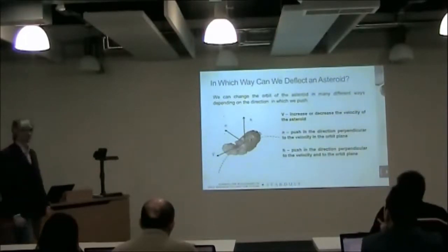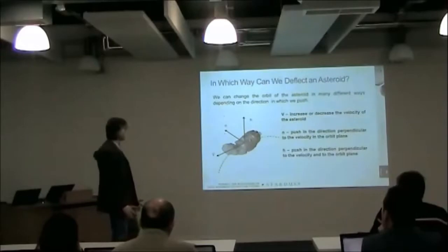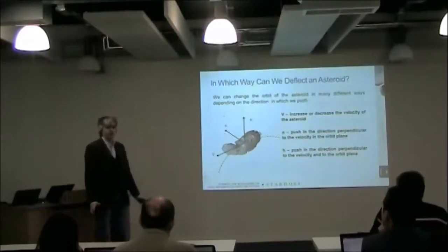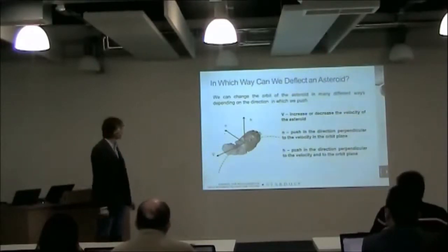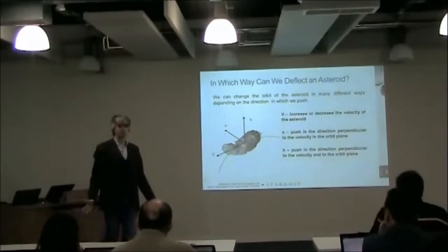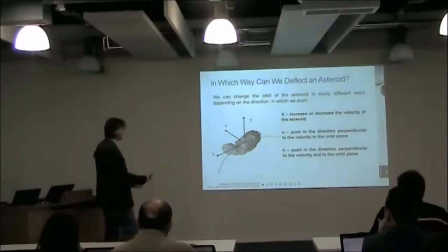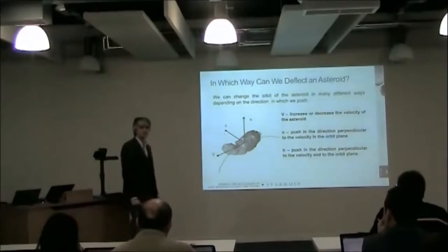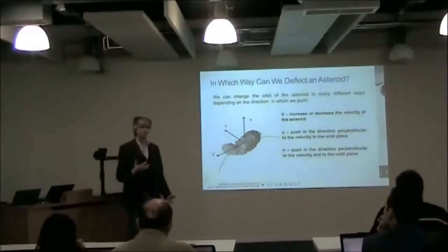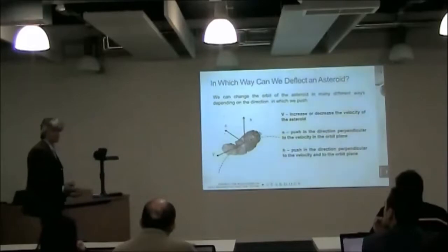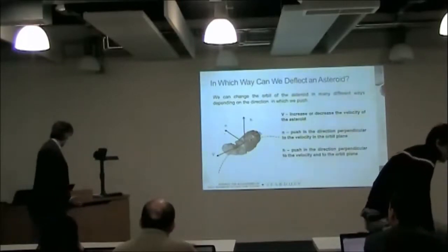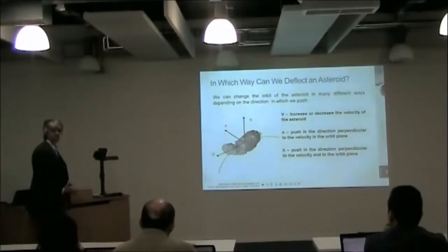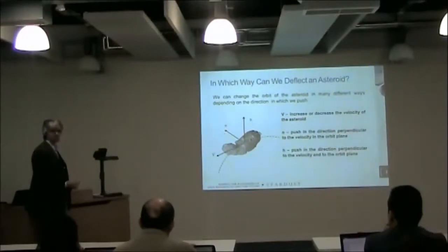When we try to deflect an asteroid, we have three options: to change the velocity in the direction of the velocity of the asteroid, normal to it, or out of plane. Each one of these actions has a different consequence. We can accelerate or decelerate the asteroid, nudge it sideways, or try to change the orbit plane.